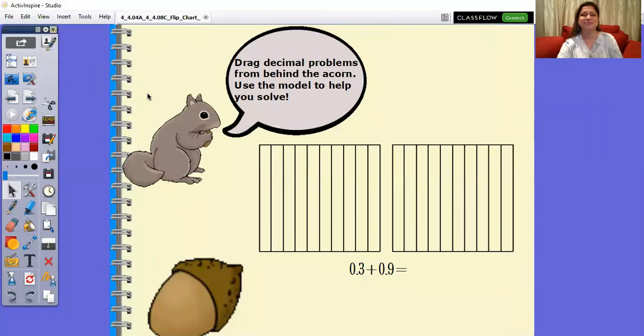Let's take a look at what decimals look like. For example, here we have 0.3 tenths plus 0.9 tenths. Now I could easily do mental math with this, but I do want to stack them up, line up the dots, and then add them up.